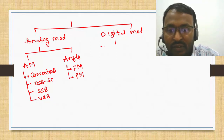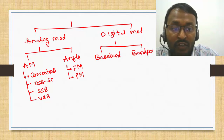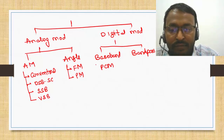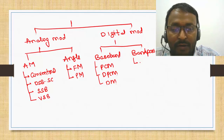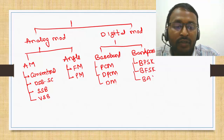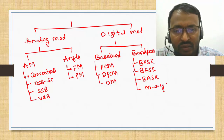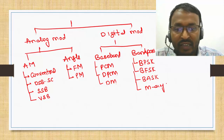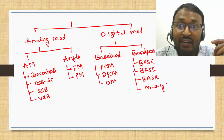In digital modulation schemes, we have baseband modulation techniques and band-pass modulation techniques. In baseband, we have PCM, DPCM, and delta modulation. In band-pass, we have BPSK, binary frequency shift keying, and binary amplitude shift keying, and finally QAM — quadrature amplitude modulation techniques. We will try to cover all these modulation techniques, and then go on to others like GMSK, spread-spectrum modulation, and spatial modulation, which is currently used in 5G technologies.